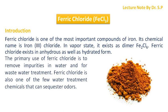Ferric chloride is one of the most important compounds of iron. Its chemical name is iron trichloride. In vapor state, it exists as a dimer Fe2Cl6. Ferric chloride exists in anhydrous as well as hydrated form. The primary use of ferric chloride is to remove impurities in water and for wastewater treatment. Ferric chloride is also one of the few water treatment chemicals that can sequester odors.